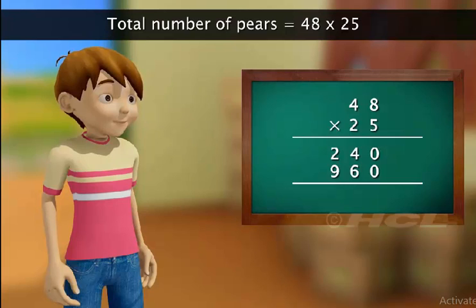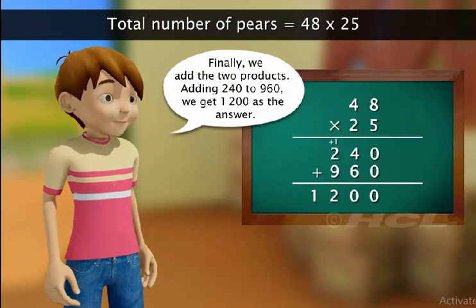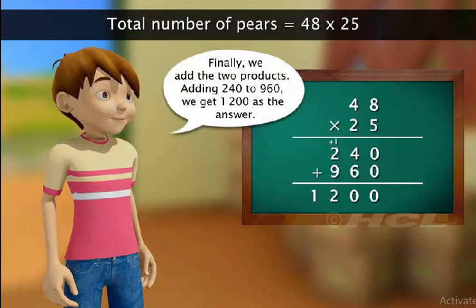Finally, we add the two products. Adding 240 to 960, we get 1200 as the answer. Has Sam done the multiplication correctly?